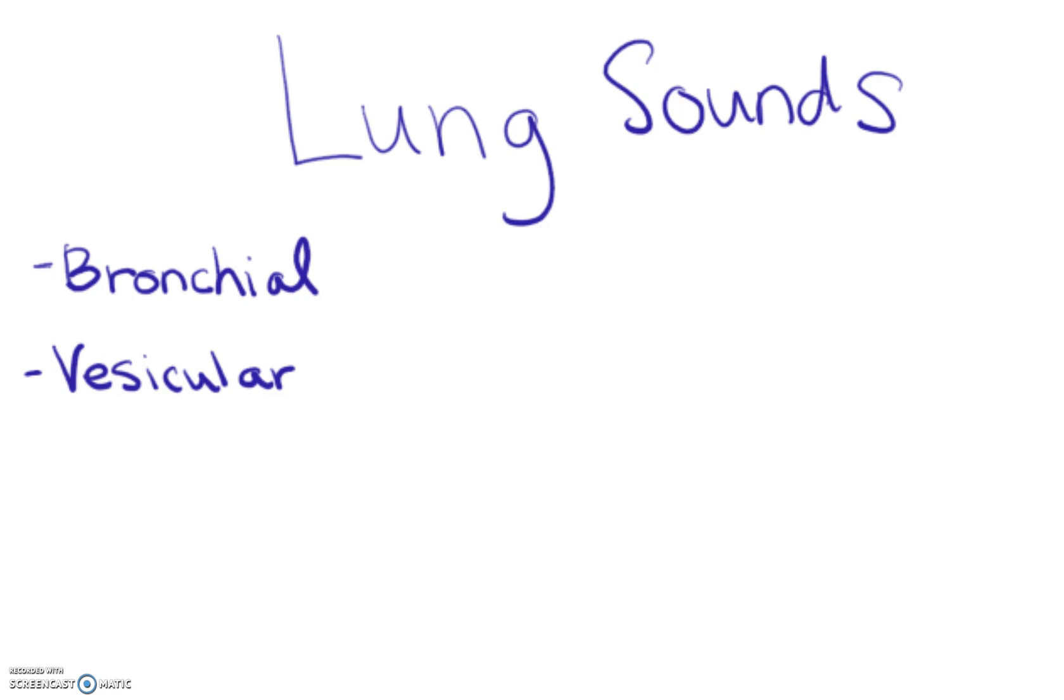First let's talk about bronchial and vesicular lung sounds. In general, bronchial sounds are heard over your bronchi and bronchioles, your larger conducting airways. You've got your trachea, your bronchi, then those turn into bronchioles, lobar bronchioles, then smaller bronchioles, and ultimately you end up getting to alveoli. Bronchial sounds are sort of louder and harsher, and you hear them more in this area here.